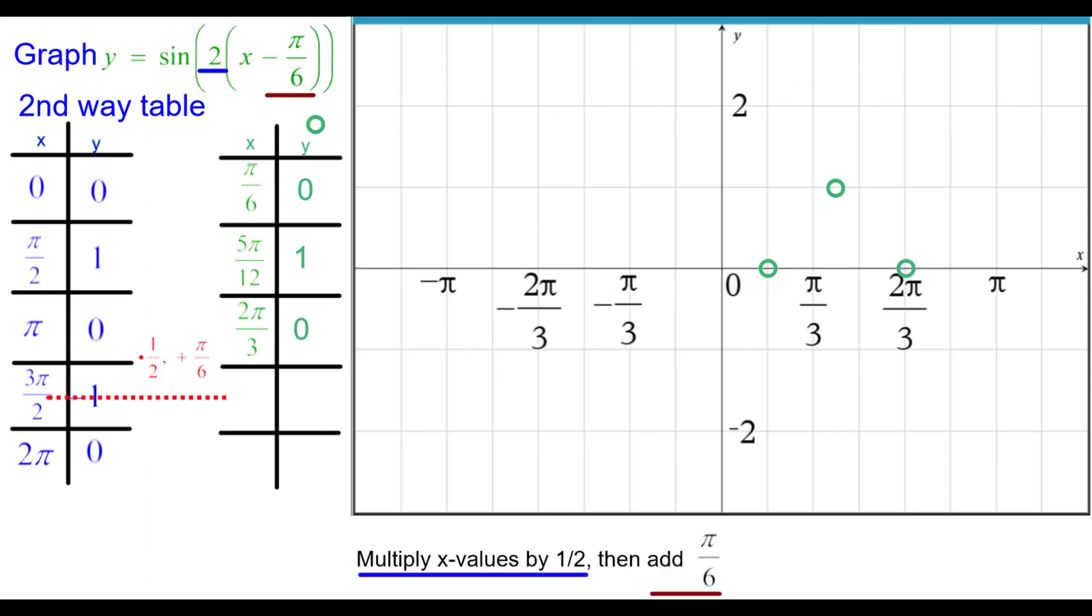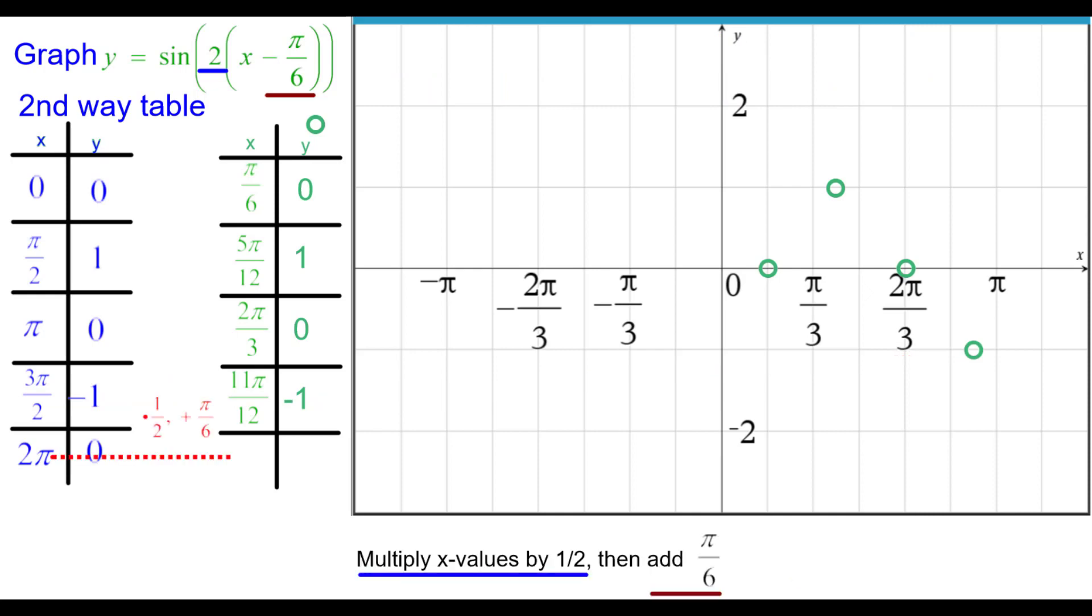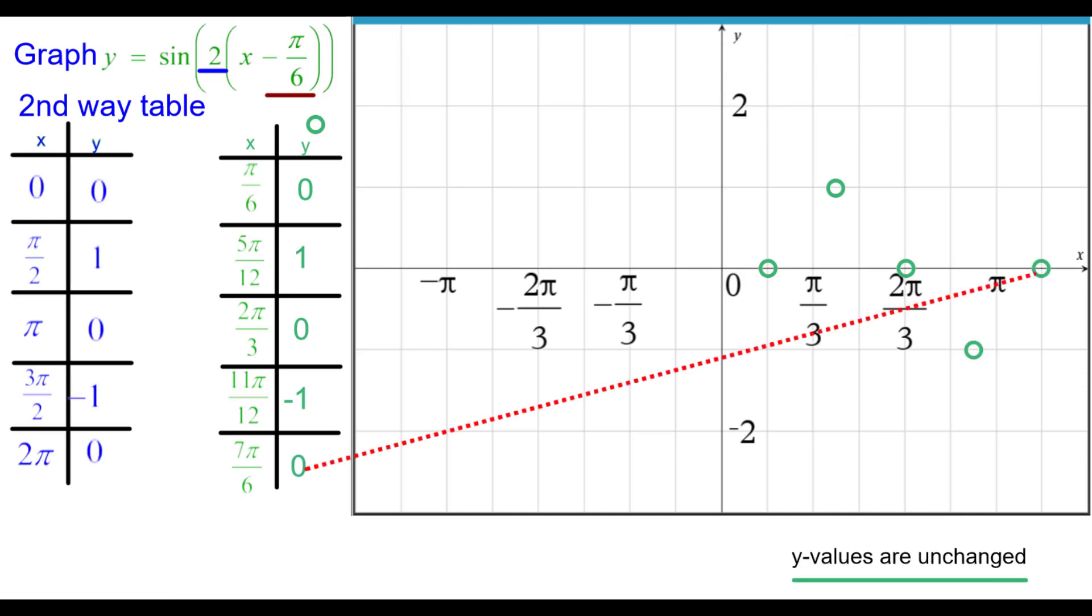3 pi over 2 times 1 half plus pi over 6. Common denominator of 12. 11 pi over 12. Common negative 1. And 2 pi times 1 half plus pi over 6. Pi plus 0 sixth is 7 sixth pi. Comma 0.